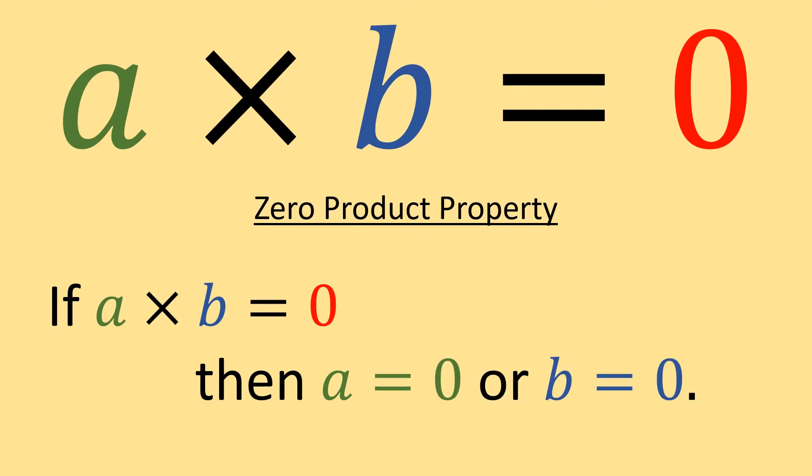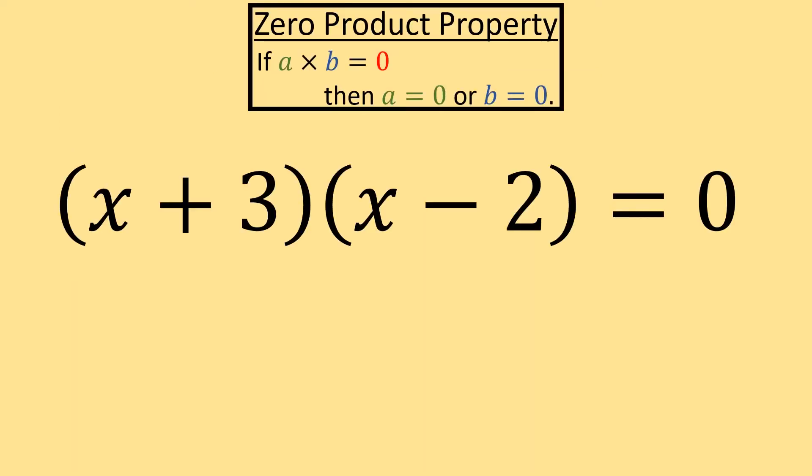And we generally use this property when we're working with a factored form of a polynomial set equal to zero. Let's look at the quantity x plus three times the quantity x minus two equal to zero.